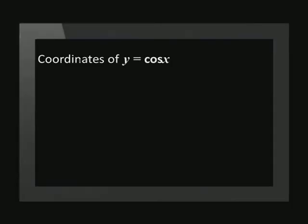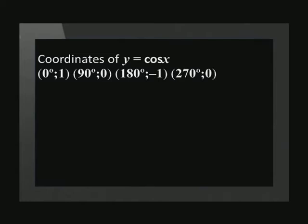We begin with our standard function and list the coordinates. They are (0, 1), (90, 0), (180, -1), (270, 0), (360, 1). The value of p in this equation is positive 30, which means that the graph has shifted 30 degrees to the left. To determine the coordinates, we subtract 30 from each x coordinate.